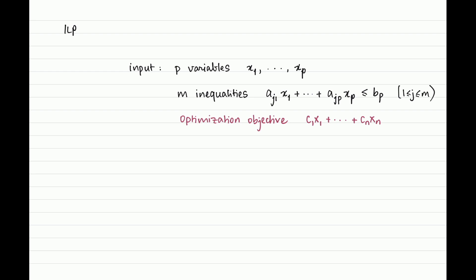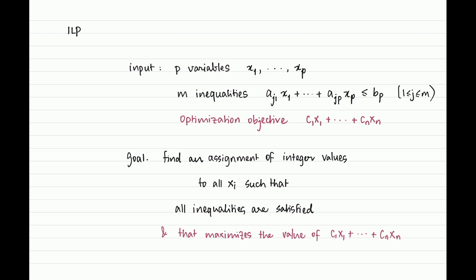The objective function can be thought of as a linear combination of the variables with integer coefficients — we think of this as c times x. The goal is to find an assignment of integers to the variables so that the system of inequalities is satisfied and the objective function is optimized. I've said we want to maximize, but you could define a variant where you minimize instead. The algorithms for ILP work equally well on both versions.